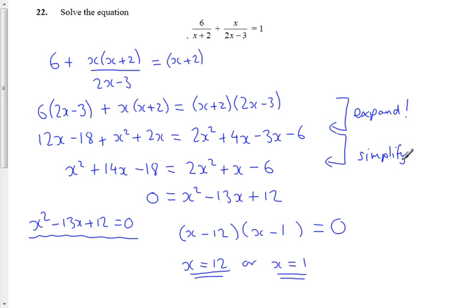I've simplified, and then what I've done is I've just collected everything together to give you a positive x squared, so I've collected everything on the right, so I get x squared minus 13x plus 12, which I've then solved by factorizing, giving me my two solutions.